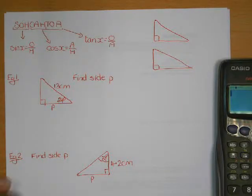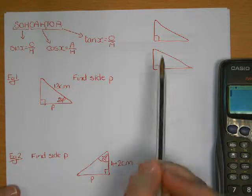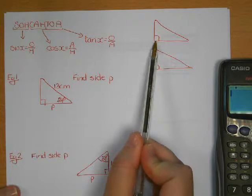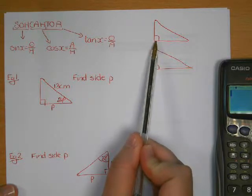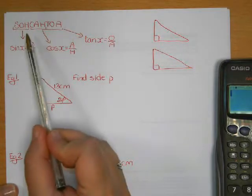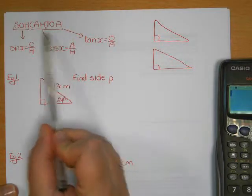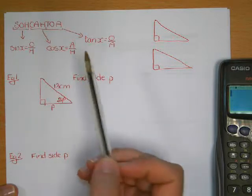This video explains how to use trigonometry to find a side or an angle in a right-angle triangle. It can only be used in a triangle that has a right angle in it. Sometimes instead of calling it trigonometry, people call it SOHCAHTOA, which is the acronym used to remember the three ratios you can use.